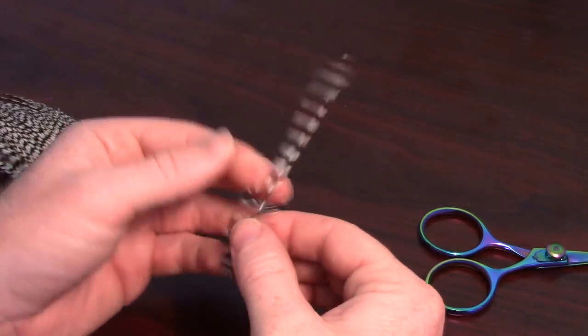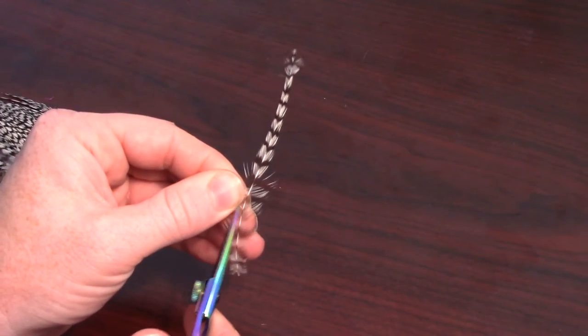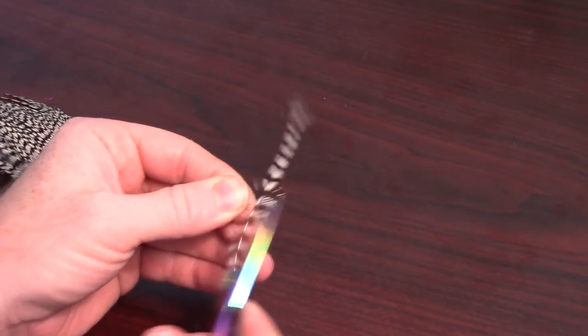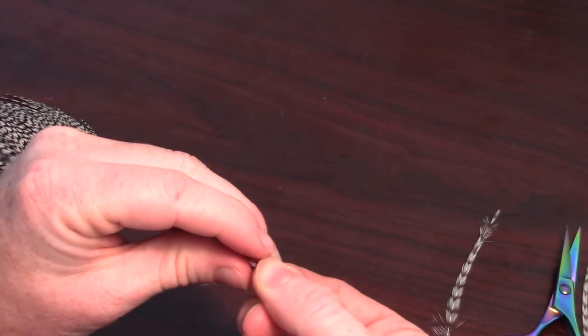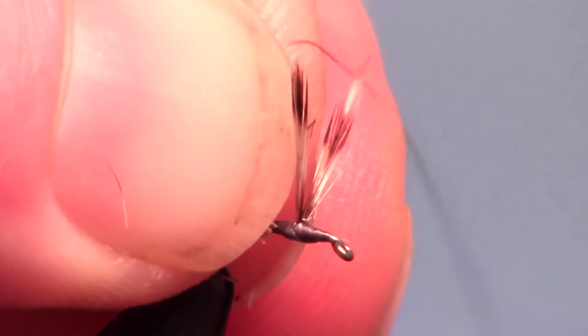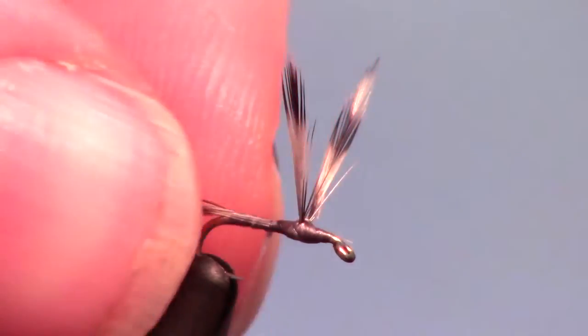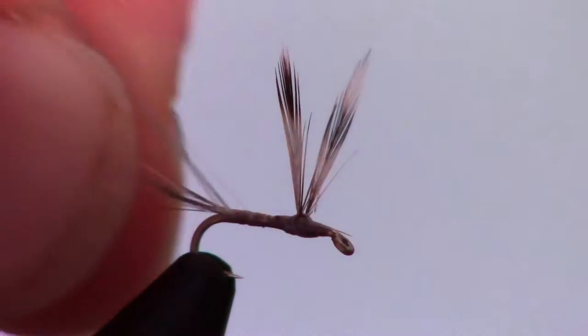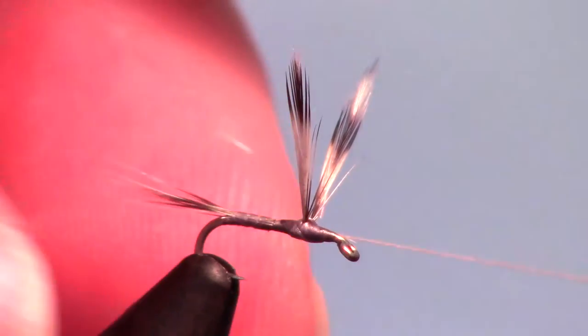Take a grizzly hackle and trim off a few of the longer fibers near the base of the hackle. Then tie them in so they are sticking out the back of the fly about the length of the hook. I like to add a wrap or two under the tail in order to keep it angled straight.